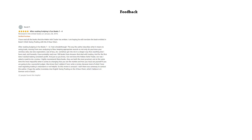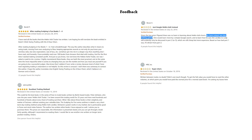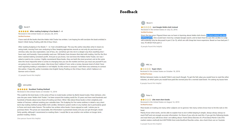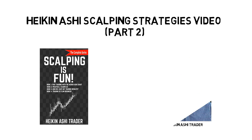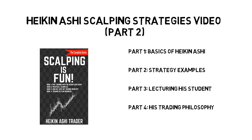The feedback there is mixed — some complain these are common knowledge which could be learned from videos online, and some praise the knowledge they've gained. The ebook is divided into 4 parts: Part 1 covers the basics of Heikin Ashi; Part 2 covers strategy examples; Part 3 is his journal of lecturing a student on a one-on-one course; Part 4 covers his rules on when to enter the market and his philosophy of trading.